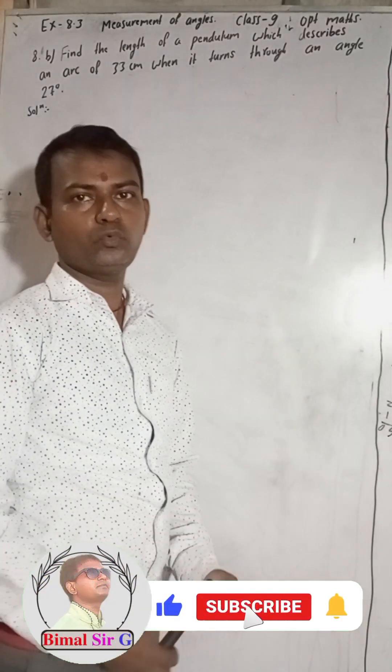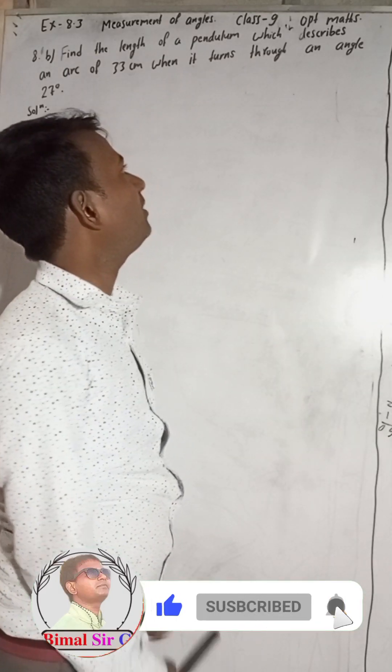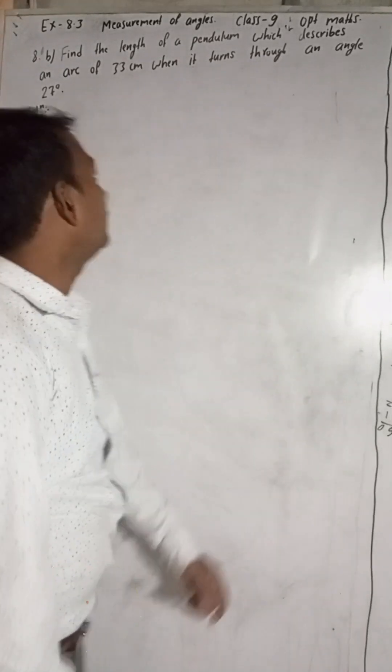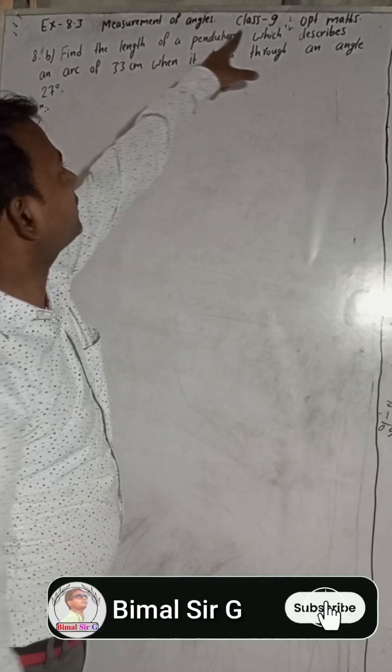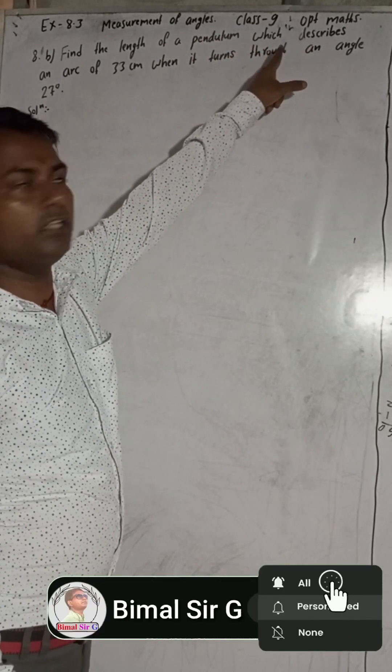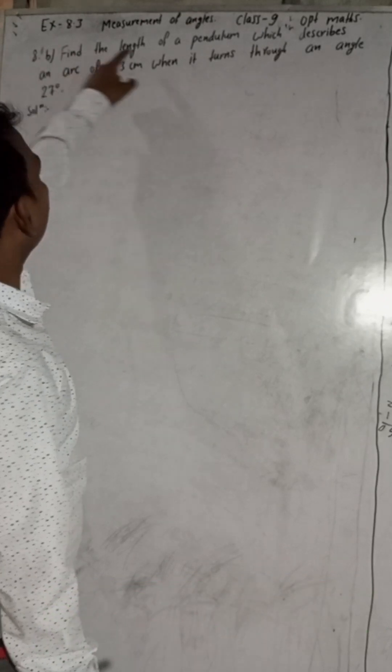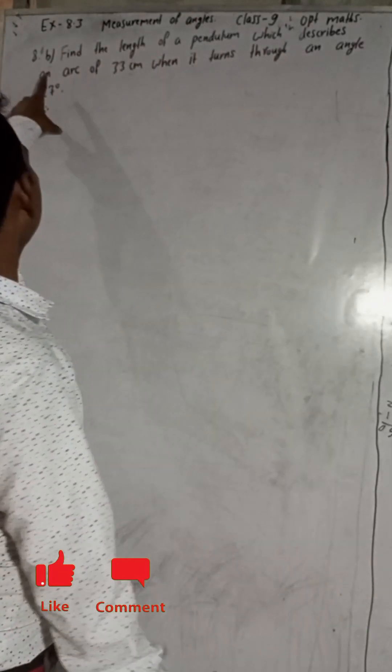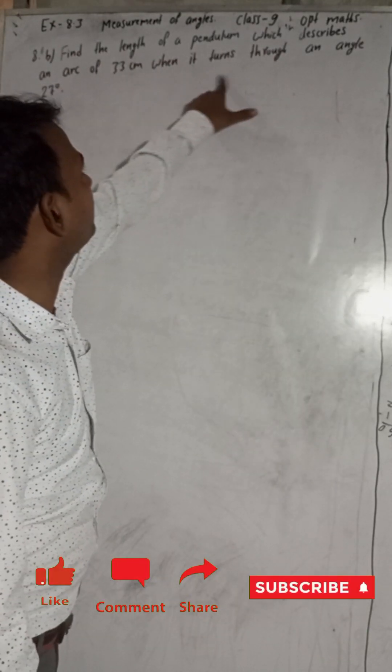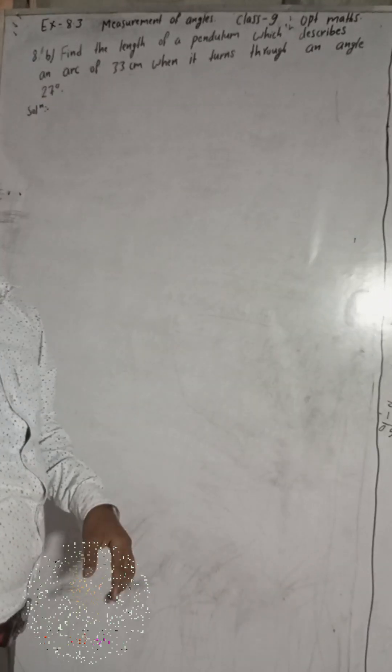Hi class 9, welcome back to Vimal Surge YouTube channel. This is a problem from class 9 OPT Mathematics, Vedanta Publications, Exercise 8.3-8b. Find the length of a pendulum which describes an arc of 33 cm when it turns through an angle of 27 degrees.